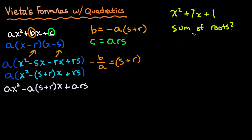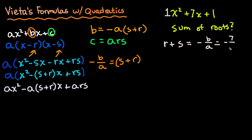So how do we use this? In our polynomial x squared plus 7x plus 1, a is 1 (the invisible leading coefficient) and b is 7. The sum of the roots r plus s is negative b over a, which equals negative 7 over 1, which is negative 7. We don't even need to know the roots themselves.